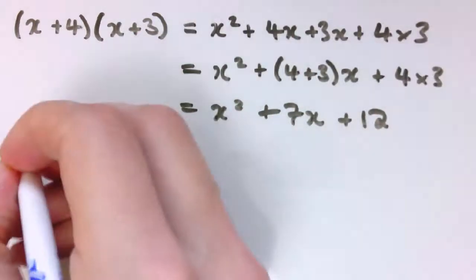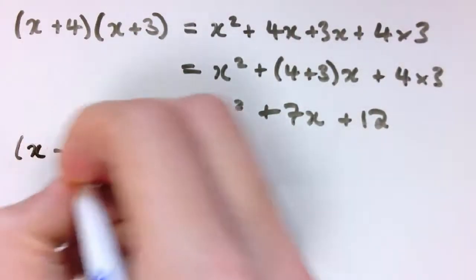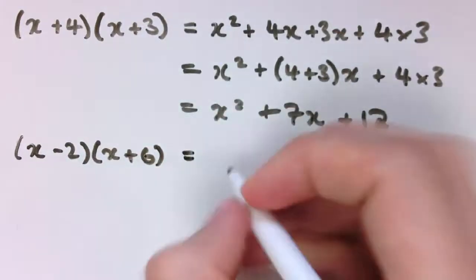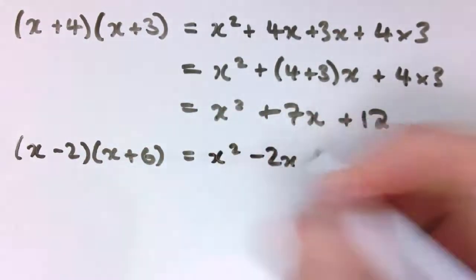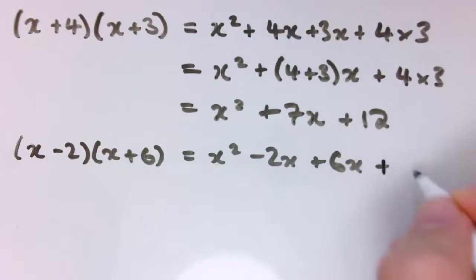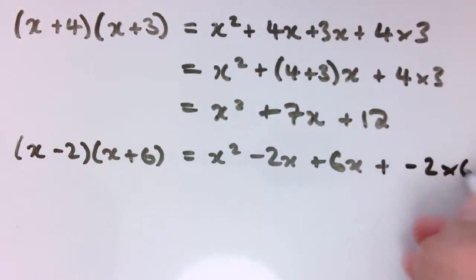Before we do, let's just have a quick look at one with a negative value in it. So what if I did x minus 2 times x plus 6? Then that would be x squared minus 2x plus 6x minus 12, and actually this minus 12 I still want to think of it as plus minus 2 times 6.